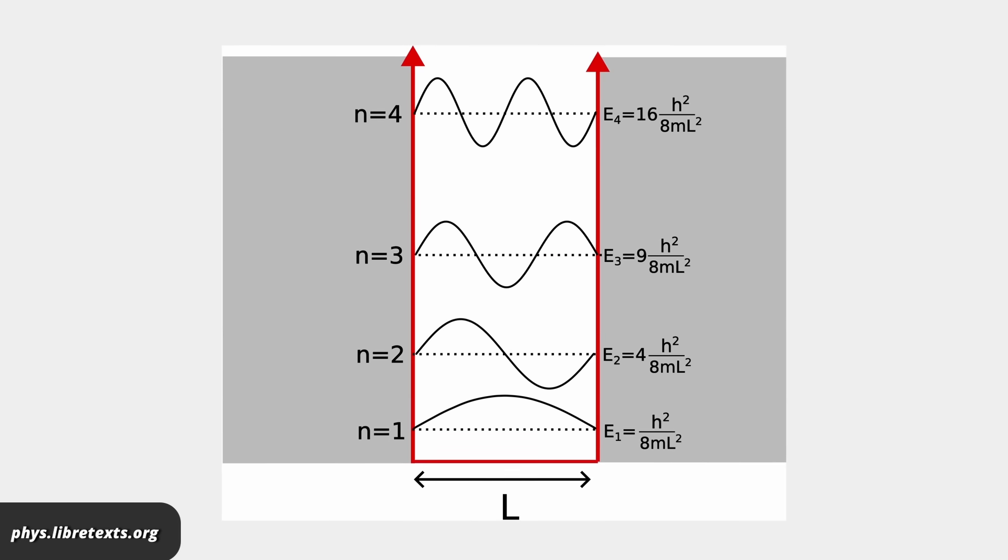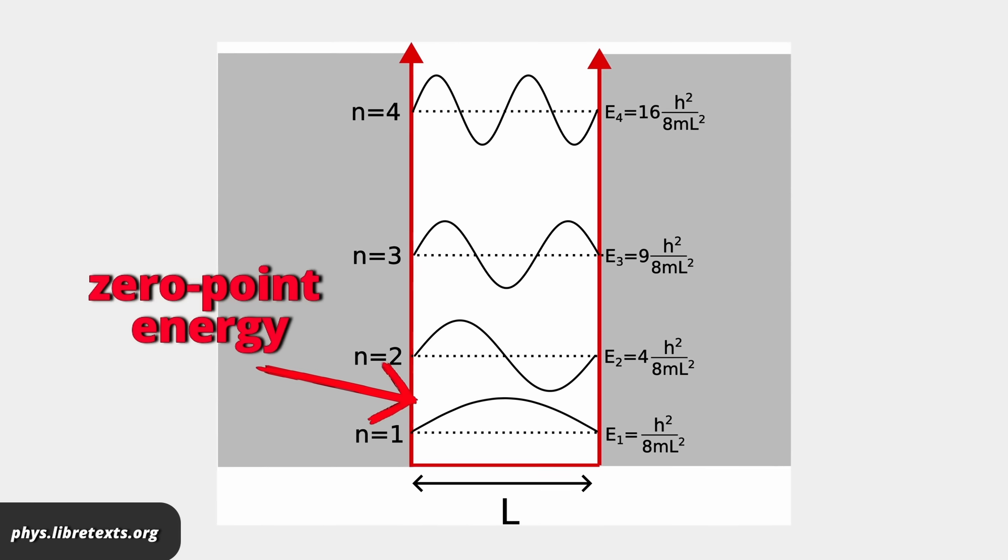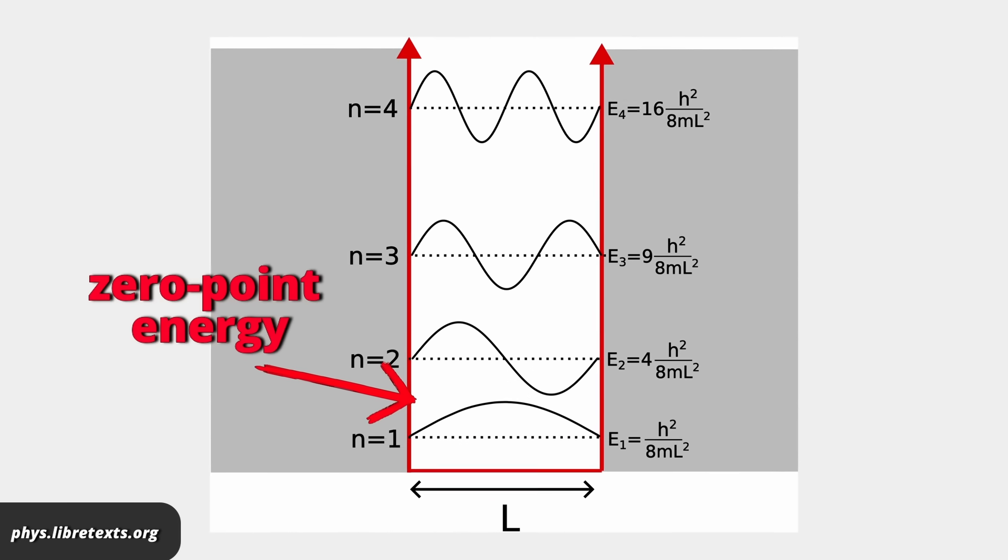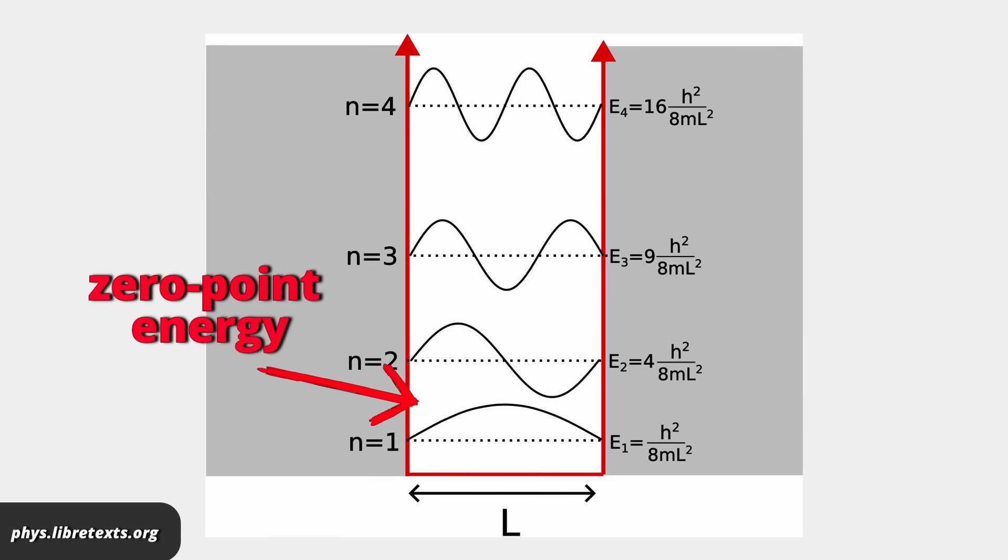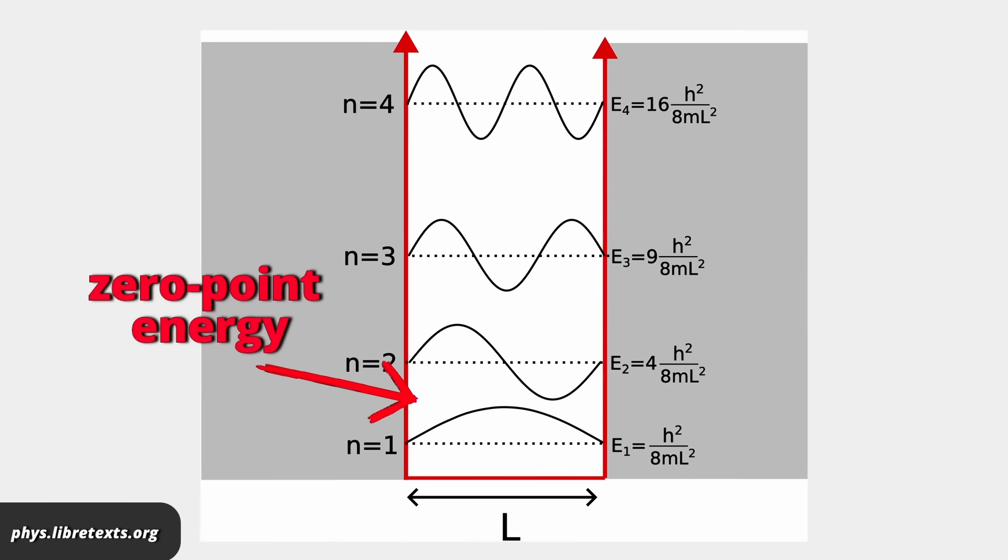This means that the state of lowest possible energy is above the classical no energy. And this is the so-called zero-point energy of a quantum system. It's energy that's always there, inevitably, because the particle has quantum properties. It's even still there at zero temperature. It's there in the vacuum. You cannot ever get rid of it. It's like emails from conferences you once attended.